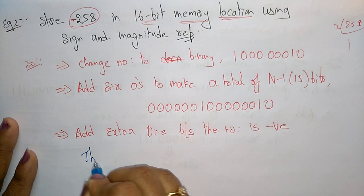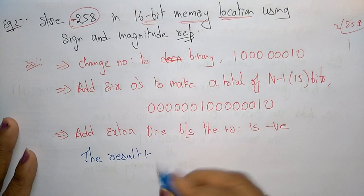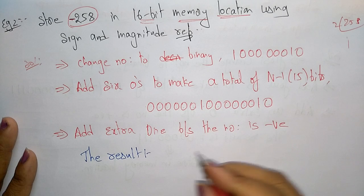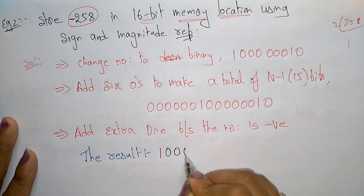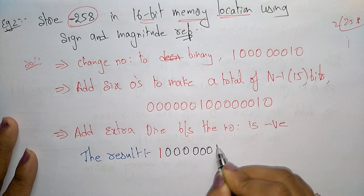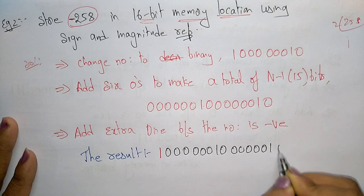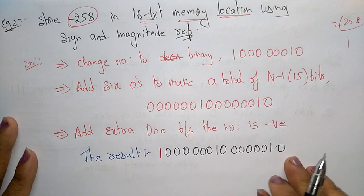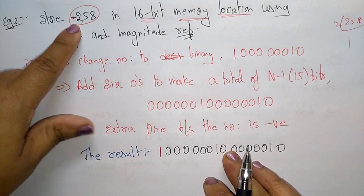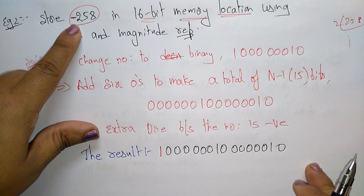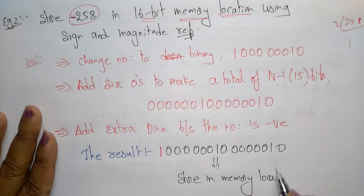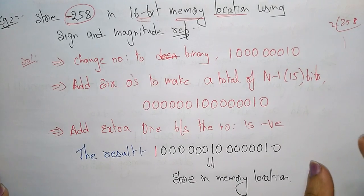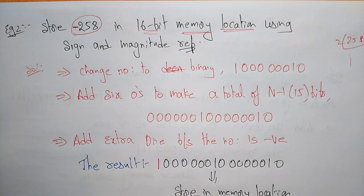After adding the extra 1, the result is a complete 16-bit number: 1 followed by the 15 magnitude bits. So minus 258 is converted into a 16-bit number and stored in the memory location. This concludes the explanation of sign magnitude for signed integers.